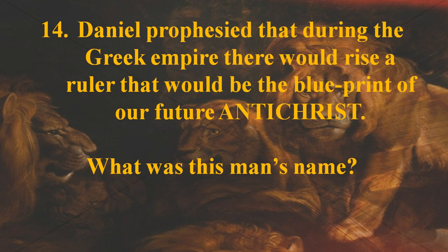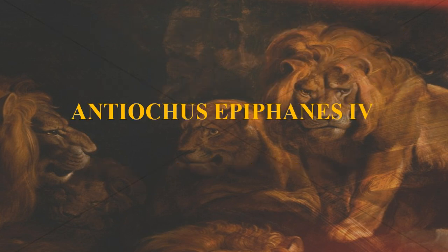Number fourteen: Daniel prophesied that during the Greek Empire there would rise a ruler that would be the blueprint of our future Antichrist. What was this man's name? Antiochus Epiphanes IV.